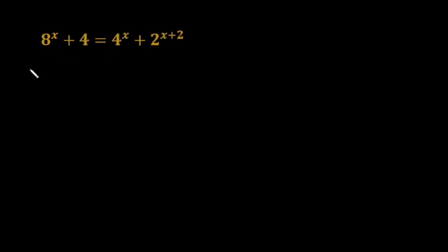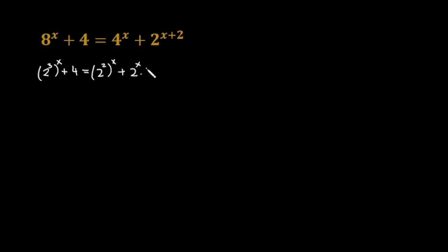So this equation can be further written as 2 raised to the power 3, raised to the power x plus 4, equals 2 raised to the power 2, raised to the power x. Now I can break this term using the law of exponents: x raised to the power a plus b equals x raised to the power a times x raised to the power b.